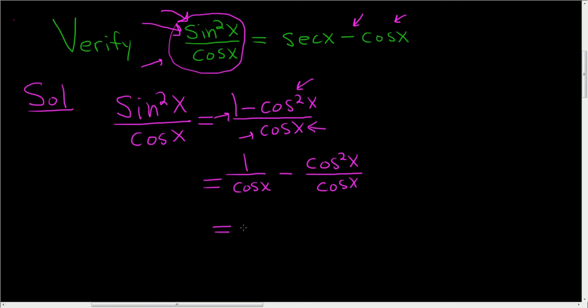This is equal to 1 over cosine, that's the secant function, minus and then cosine squared over cosine, that's just cosine. And that worked out really well.